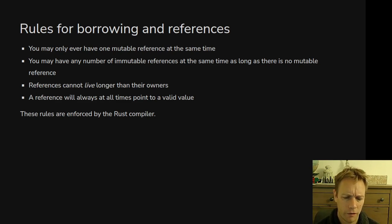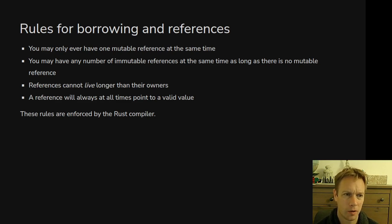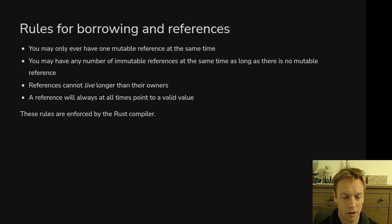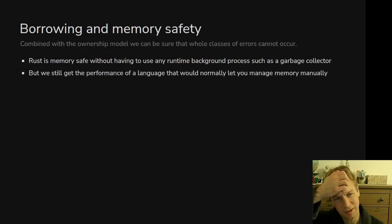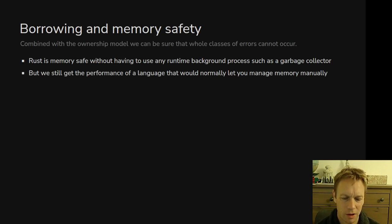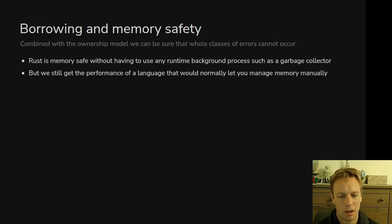If you're familiar with pointers from languages like C and C++, references are a bit like pointers but they can never be invalid. Underneath, they're probably implemented similarly. If it helps to think of them as pointers you can, but as you've seen from this slide, there are a lot of rules around that enforced by the compiler. In practice, they're not really like pointers.